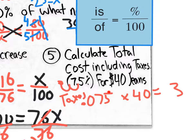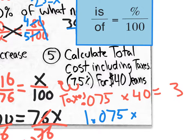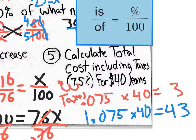There's a shortcut: instead of using 0.075 and then adding the original price, put a 1 in front to make it 1.075. This only works when calculating total price including taxes. Think of it as the distributive property — 1 times 40 is the original $40, plus 0.075 times 40 is the $3 tax. So 1.075 times 40 gives you $43 directly on the calculator.